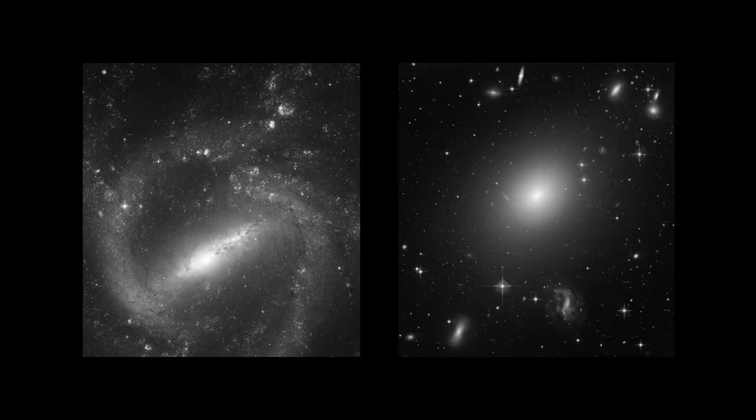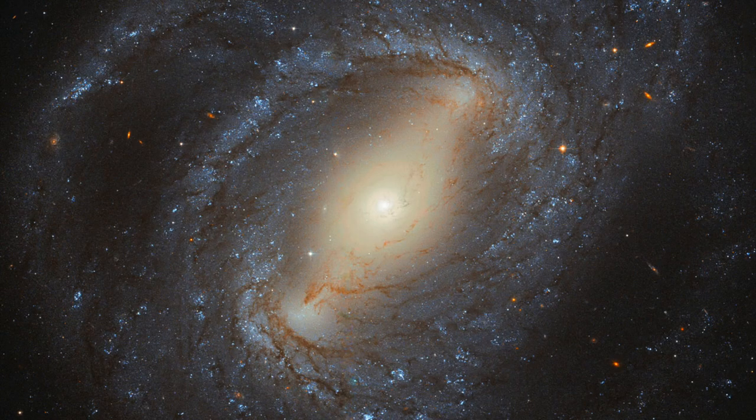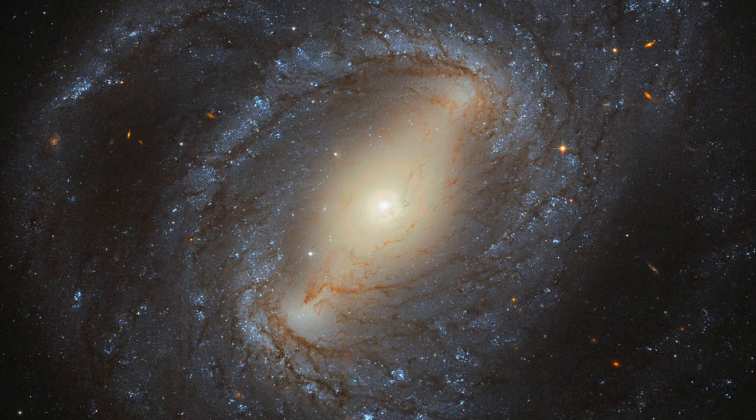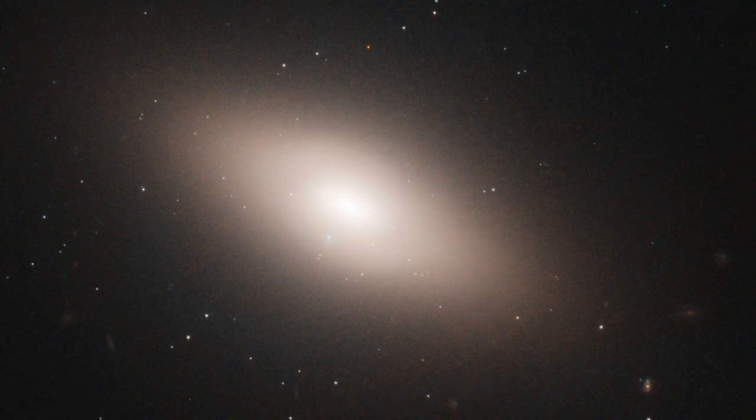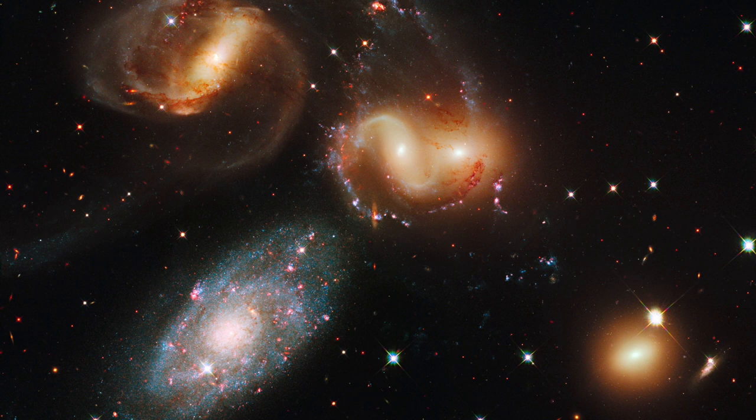You may have noticed that spiral and elliptical galaxies don't just differ in their structure, but also in their colors as well. Spiral galaxies are predominantly blue, whereas elliptical and lenticular galaxies are red or yellow. The color of a galaxy tells us about the average age of stars in that galaxy.